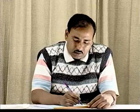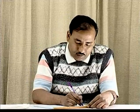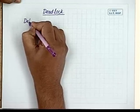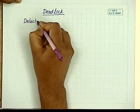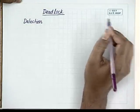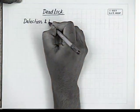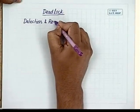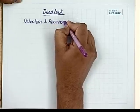We have seen two approaches to deal with deadlock problems: deadlock prevention and deadlock avoidance. There is a third approach — deadlock detection and recovery. In this approach, the system checks if there is a deadlock, and if so, the system tries to recover from it.